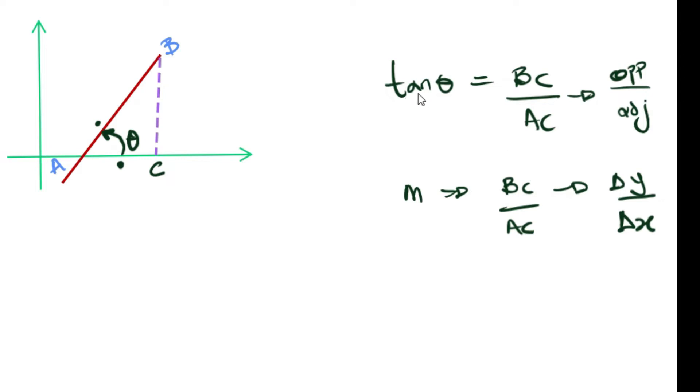So now since we can see that tan theta is equals to BC over AC and M is also equals to BC over AC, we can definitely say to get our inclination of a line or the angle of inclination, we normally say that it is M is equals to tan theta. Your gradient is equals to tan theta. And one very important thing you also need to remember is that theta is in between 0 and 180.